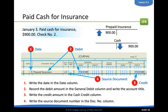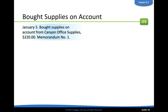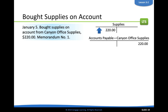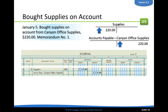Now let's look at something a little different: buying supplies on account. When you buy supplies on account, supplies go up so we debit supplies — that's an asset. But we also need to credit accounts payable, because we bought supplies on account from Canyon Office Supplies, meaning we owe them money. We didn't pay cash right now, but we owe them $220. As you'll notice, previous examples used the cash special account column, but this transaction involves supplies and accounts payable — neither are special account titles.